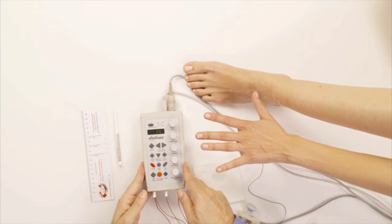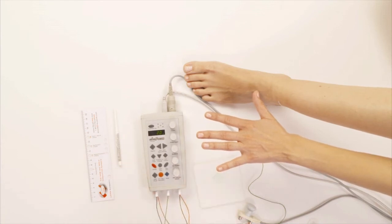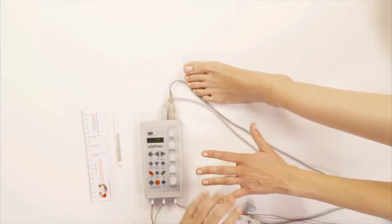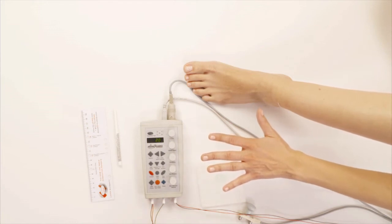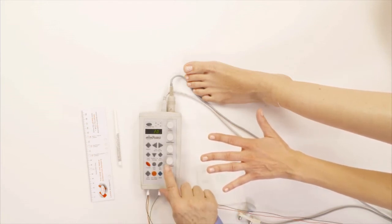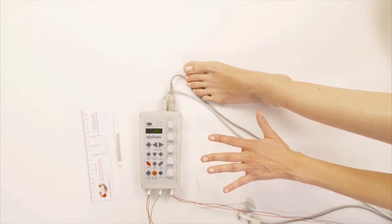And because they are connected, now we have to put the electrodes from each channel in one place. So channel one electrodes will go on the hand and channel two electrodes are going to go on the foot.